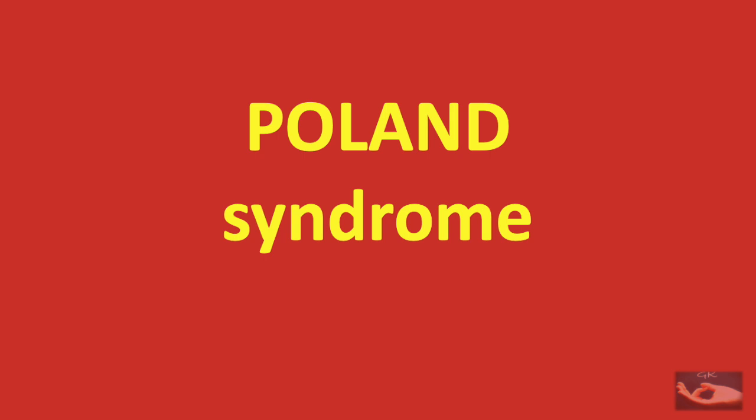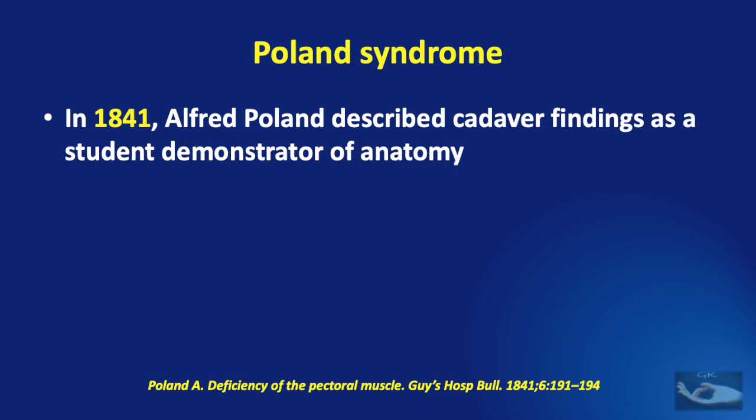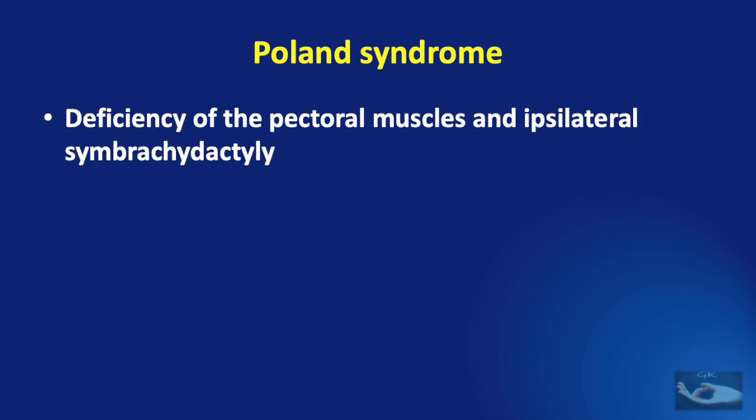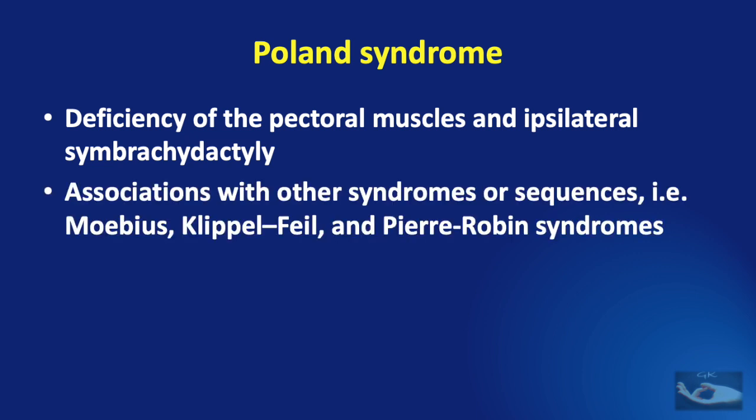Though Poland syndrome is also characterized by syndactyly between the fingers, it is different from Apert syndrome. In 1841, Poland described cadaver findings as a student demonstrator of anatomy. Clarkson published a series of three cases and named the syndrome after Poland. The two prominent features are deficiency of the pectoral muscles and ipsilateral symbrachydactyly, though these are not the only features. These findings may also have associations with other syndromes such as Möbius syndrome, Klippel-Feil syndrome, and the Parry-Romberg sequence.